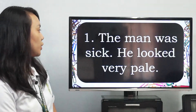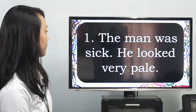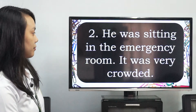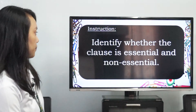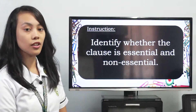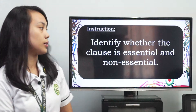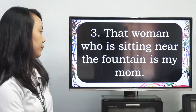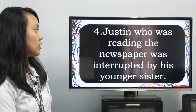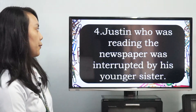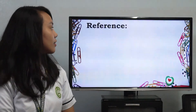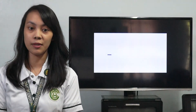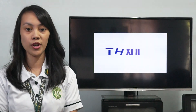Number one: The man was sick. He looked very pale. Another: He was sitting in the emergency room. It was very crowded. For the essential and non-essential exercise, identify whether the clause is essential or non-essential. One: That woman sitting near the fountain is my mom. Last: Justin, who was reading the newspaper, was interrupted by his younger sister. Feel free to write your answers in the comment box below. Thank you for watching our online tutorial — please hit the like and subscribe button to get more tutorial videos from us. Thank you.